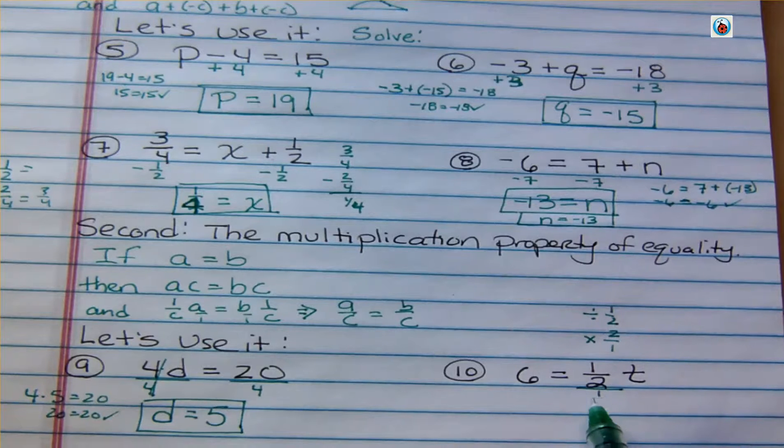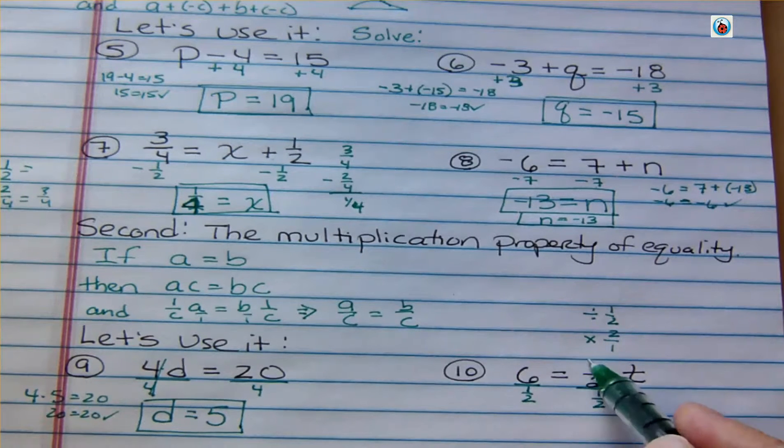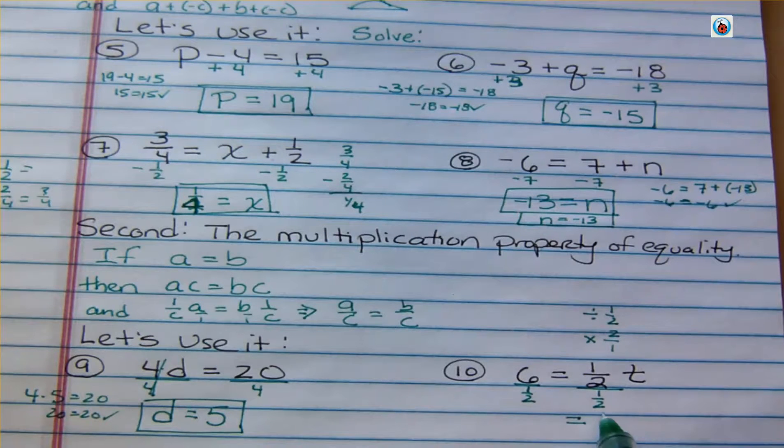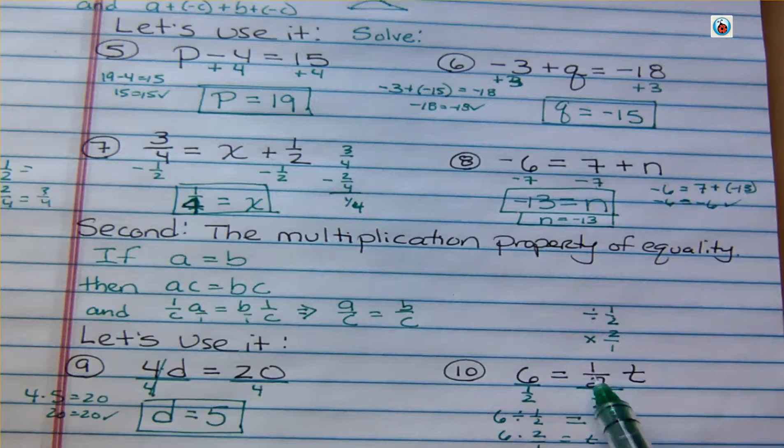I can think about it as dividing by 1 half. 1 half over 1 half. Anything divided by itself is always 1. So that just goes away. And then I have 6 divided by 1 half. 6 divided by 1 half is 6 times 2 over 1. And that means T equals 12. That means half of 12 is 6. I think we can all believe that that's true.